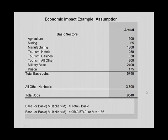This is the example that was used in the previous session. We determined that these categories of industries — using an assumption approach — were all basic industry: agriculture, mining, manufacturing, and tourism, which by definition has to be externally focused since you can't tour locally. Also a military base and prison. We summed all of those basic jobs and that was 5,740 jobs. All other non-basic jobs in the economy — jobs that either provide inputs into the basic sector or provide goods and services to households — those jobs number 3,800.